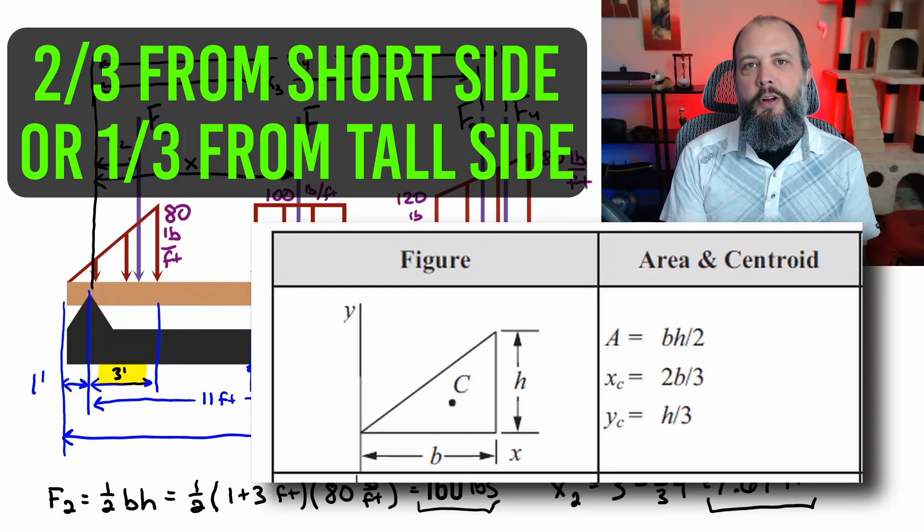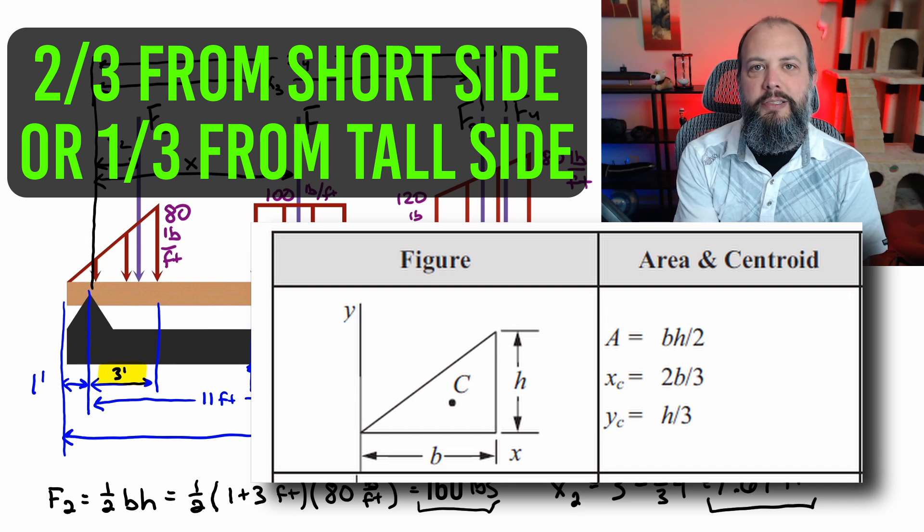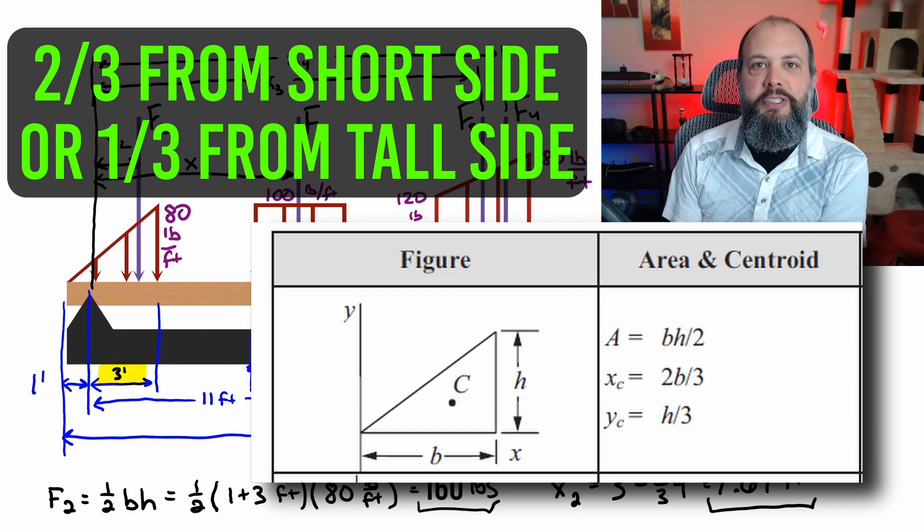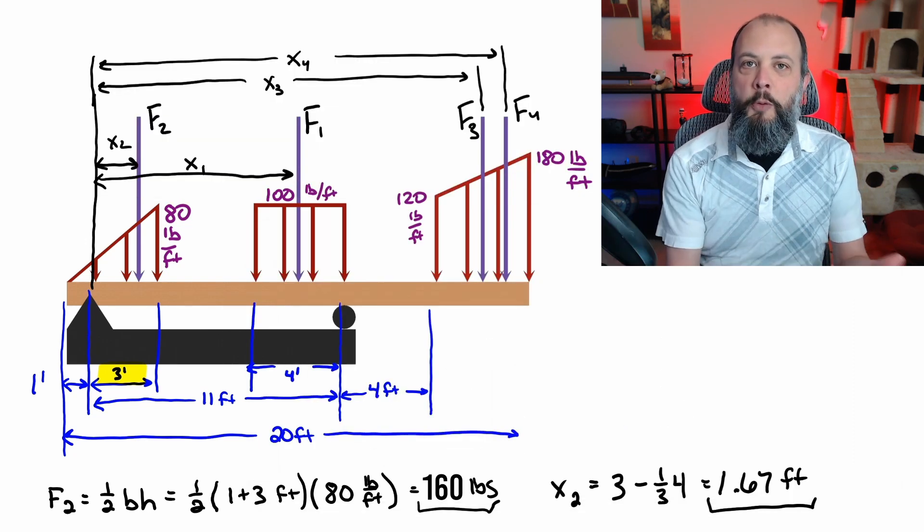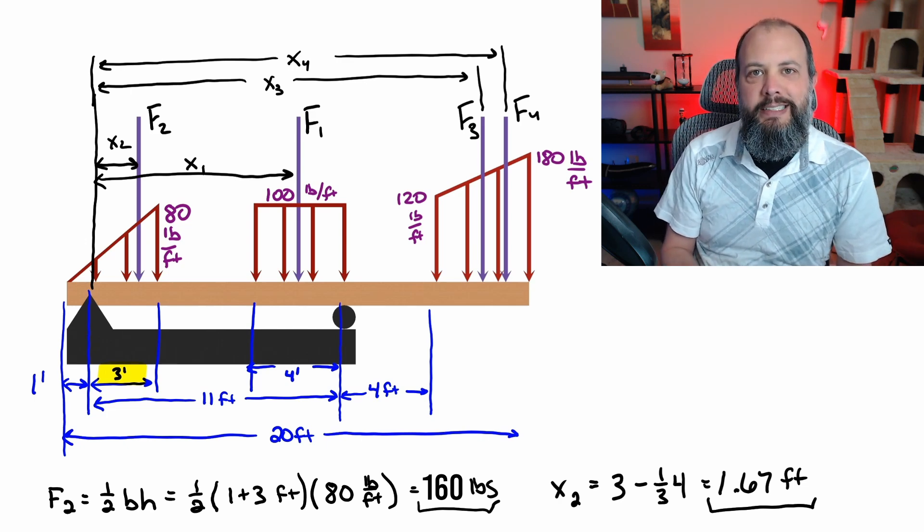And you'll see that the centroid of a triangle, instead of being one-half of the base, is actually going to be one-third of the base. And of course, it's closer to the tall side of the triangle. So that's why the purple arrow isn't drawn directly in the middle of the triangle. It's drawn skewed closer to the right-hand side.